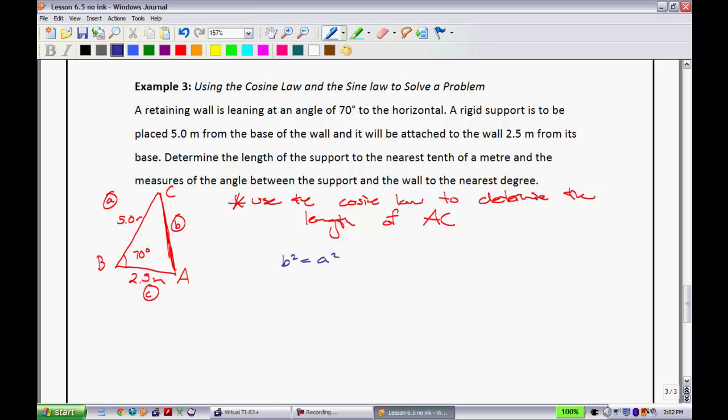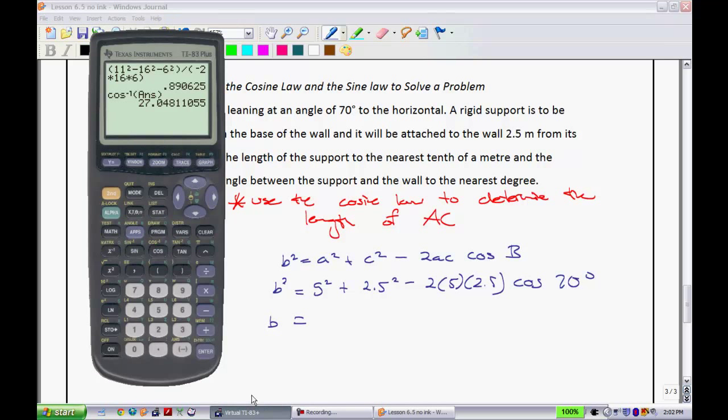So we have b squared is equal to a squared plus c squared minus 2ac the cosine of b. And substituting in here we have my a is 5 squared plus 2.5 squared minus 2 times 5 times 2.5 cosine of 70 degrees. And I will go and I will put that into my calculator. And when I do this, that's 5 squared is 2.5 squared.